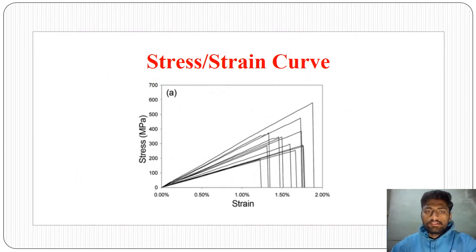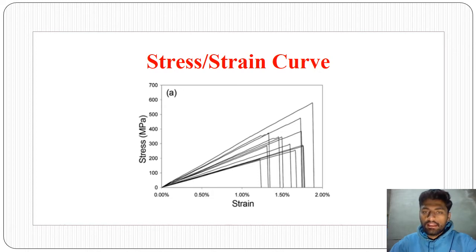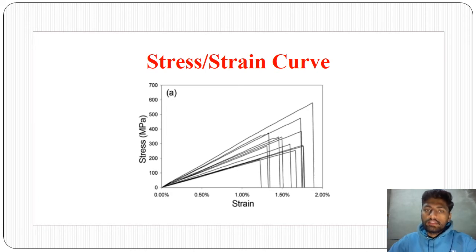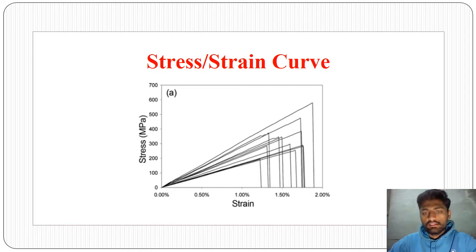The stress-strain curve of jute fiber with different span lengths is shown here. It can be seen that with increasing span length the stress-strain curve also increases. Strain is on the x-axis and stress is on the y-axis in megapascal. As the length of the specimen increases, the stress-strain curves go higher. At maximum span length, the specimen reaches approximately 600 MPa and elongates approximately 2%.